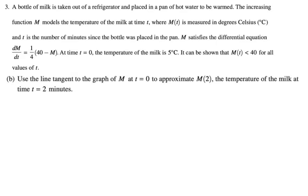Use the line tangent to the graph of m at t equals 0 to approximate m of 2, the temperature of the milk at time t equals 2 minutes. All right, so the first thing is that ordered pair that we were given, right? t is equal to 0, m, the temperature, is going to be 5. So if t is 0, then that means m is 5. We're going to need that because we need to evaluate dm/dt and we need to write our tangent line.